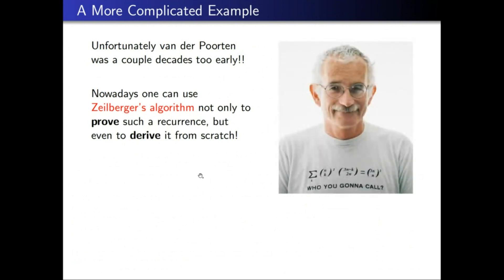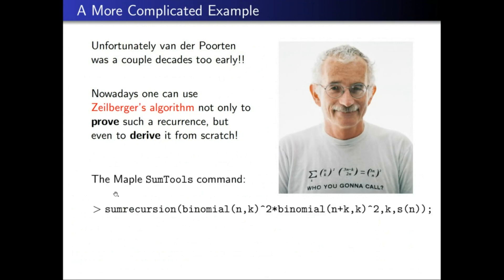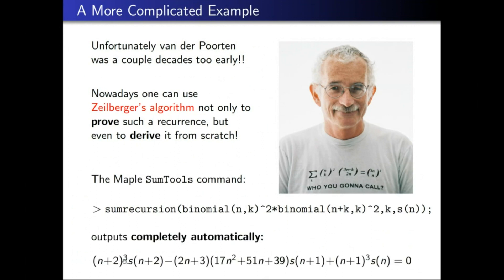Van der Poorten was a couple of decades too early — if he'd tried this 20 years later, instead of Zagier he could have used Zeilberger's algorithm, which not only proves the recurrence but derives it from scratch. This is implemented, for instance, in the SumTools package in Maple using the function SumRecursion. You input the binomial expression and completely automatically get the Apéry recurrence.